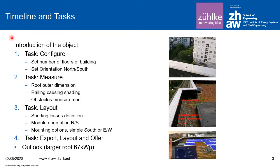Four tasks have to be carried out, starting with the configuration of the measurement equipment on the head of the planner, with the selection of the number of floors, followed by the definition of the south direction of the building.